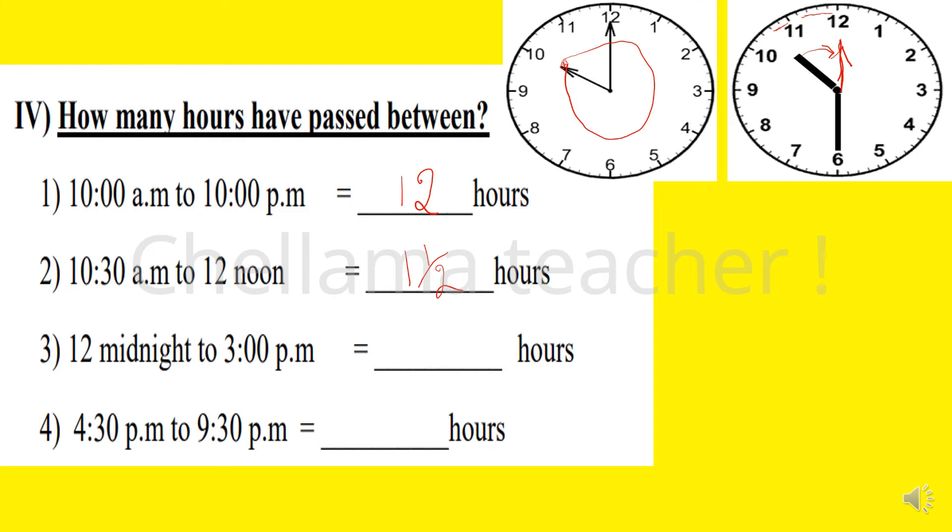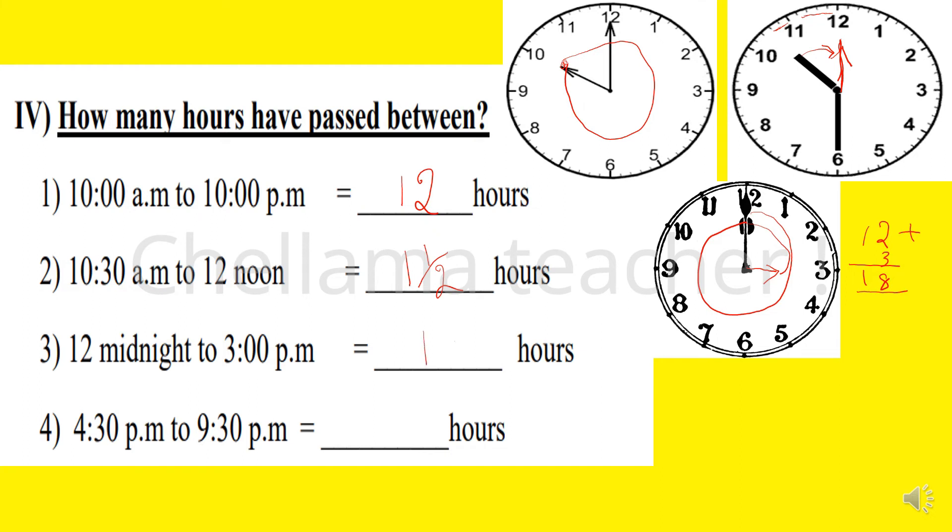Next is the third question: 12 midnight to 3 PM. This is 12 midnight, so it should complete one full round to reach 12 noon, 12 midnight to 12 noon. After that, the hour hand should point to 3. So one complete circle is 12 hours, plus 1, 2, 3 hours. So 12 plus 3 equals 15 hours. The time difference is 15 hours.